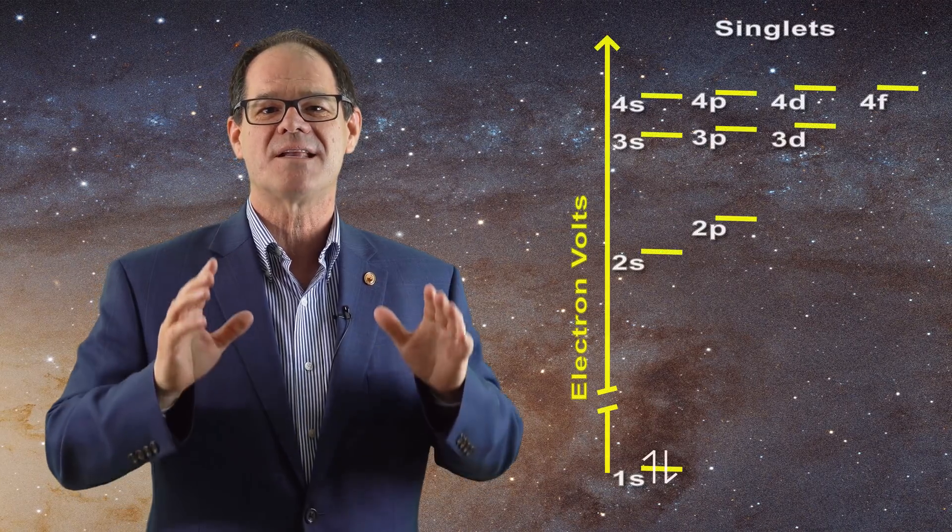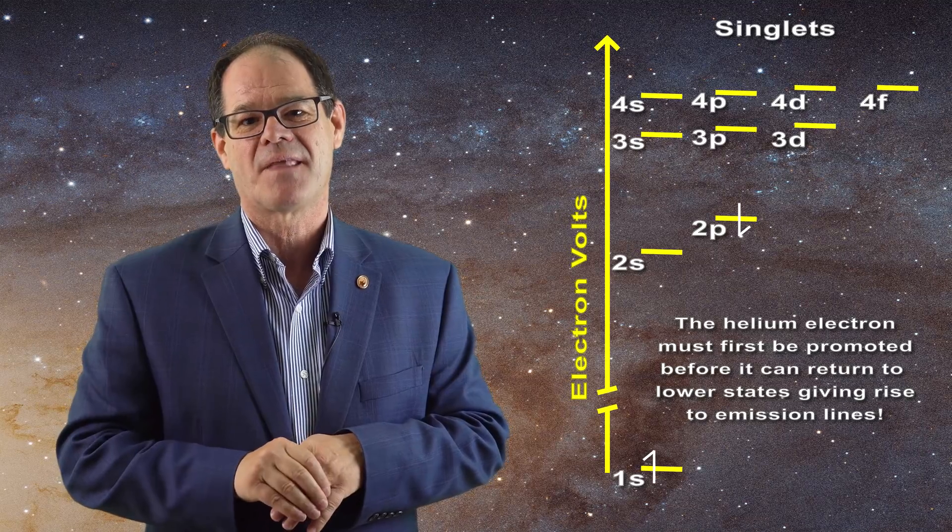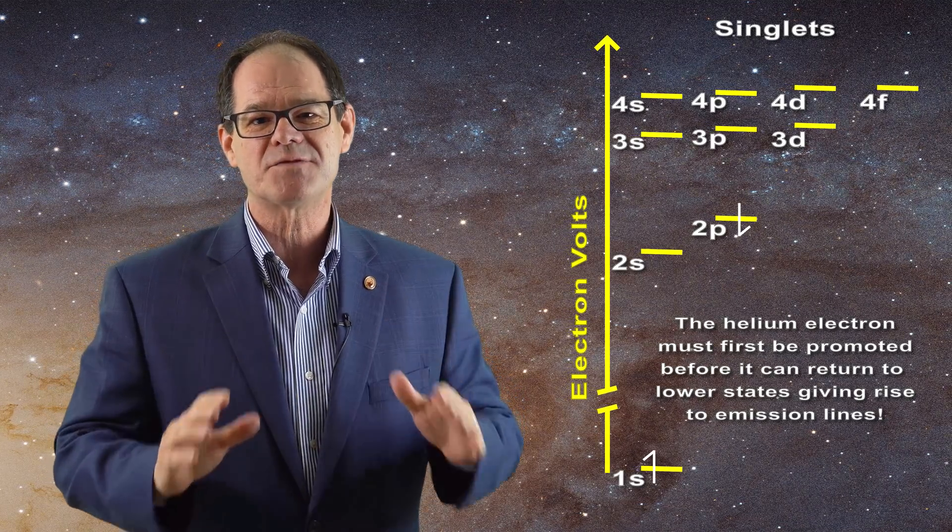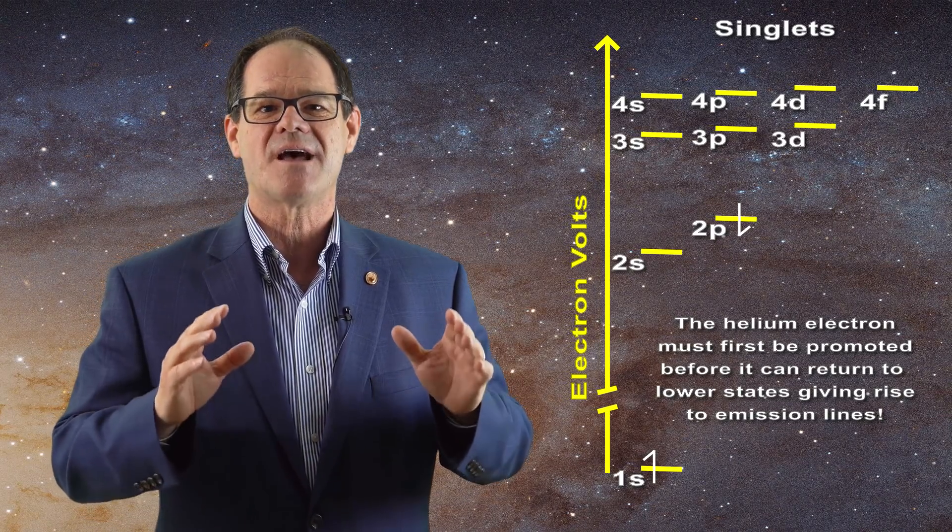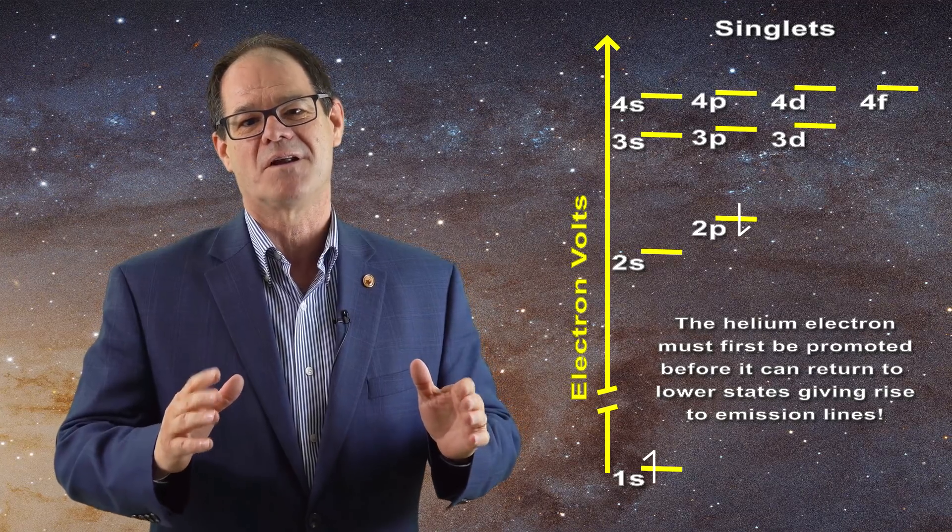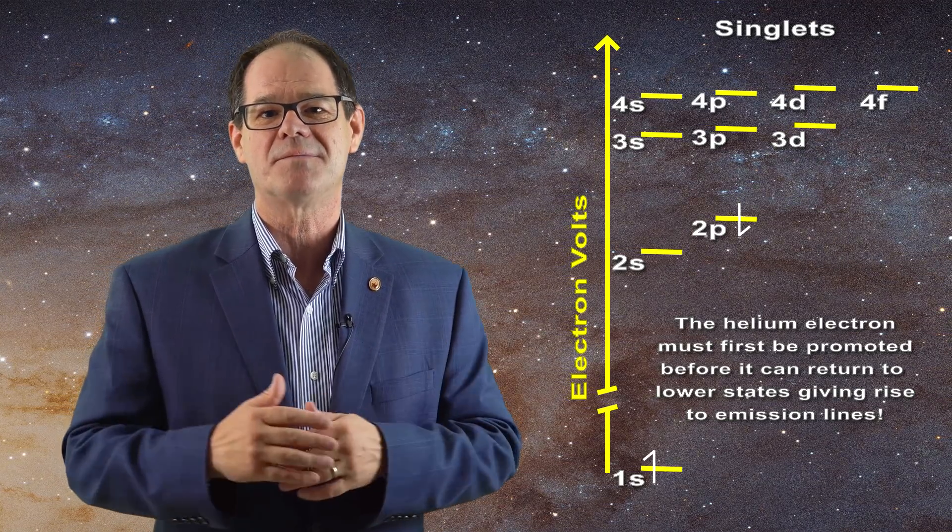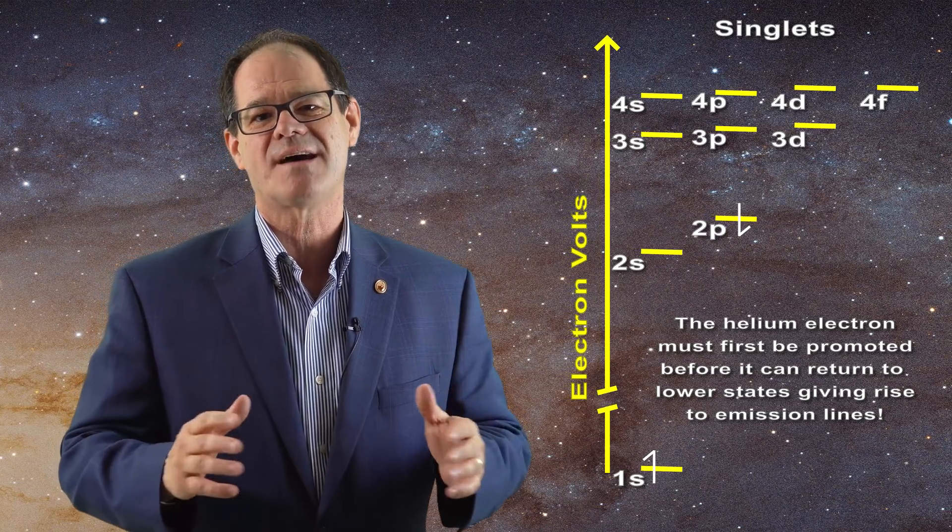Recall in this video that helium can produce strong emission lines in the chromosphere, however that requires that one of the ground state helium electrons be promoted to higher energy shells. That is a tremendous requirement in the standard solar model as the chromosphere is said to have a temperature of only about 5000 kelvin while the energy required to promote a helium electron requires temperatures in excess of 100,000 kelvin.